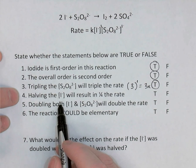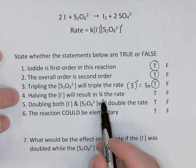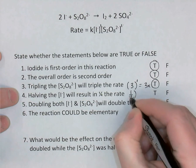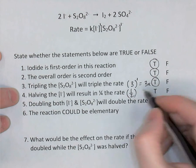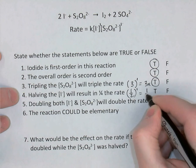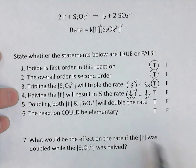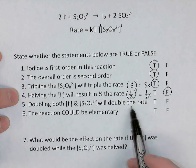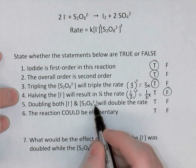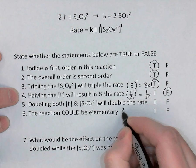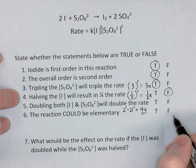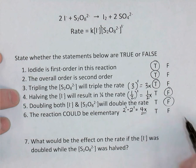If you were to halve the concentration of iodide, the result would be one-quarter the original rate — true or false? Halving iodide with order 1: (½) raised to the power of 1 gives one-half the rate, not one-quarter — false. If you double both the iodide and S₂O₈, you'll double the rate? Both are first order, so doubling both gives 2¹ times 2¹ — 4 times the original rate, not double — false.